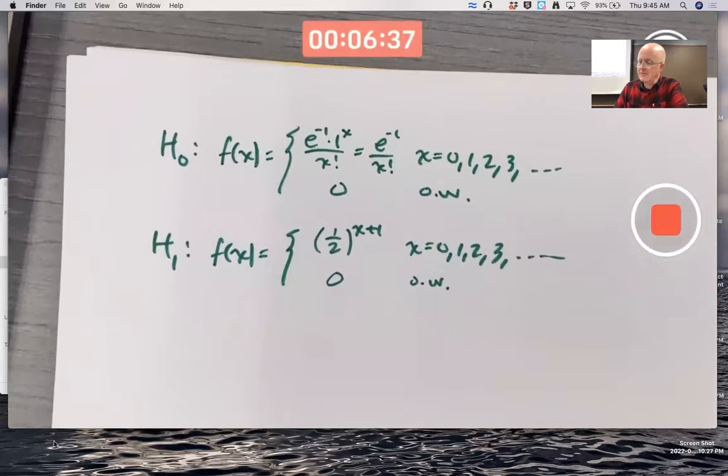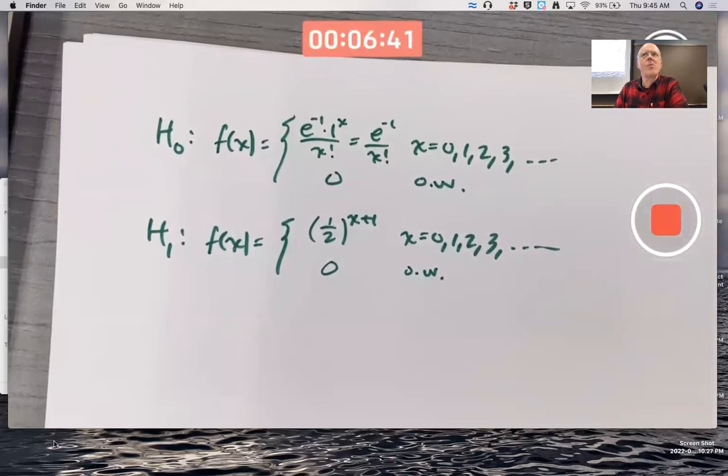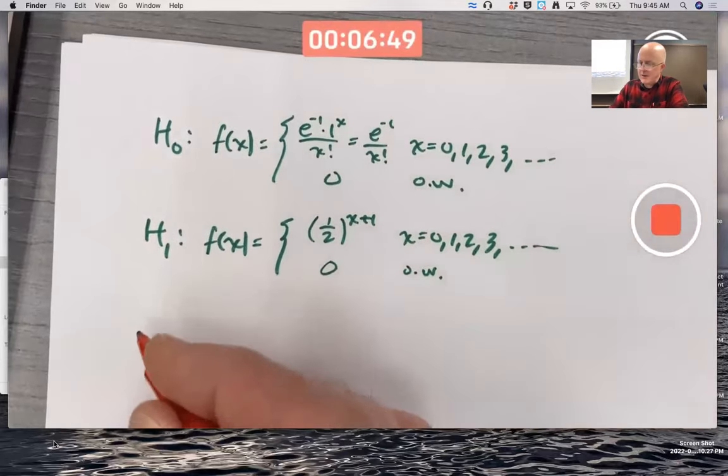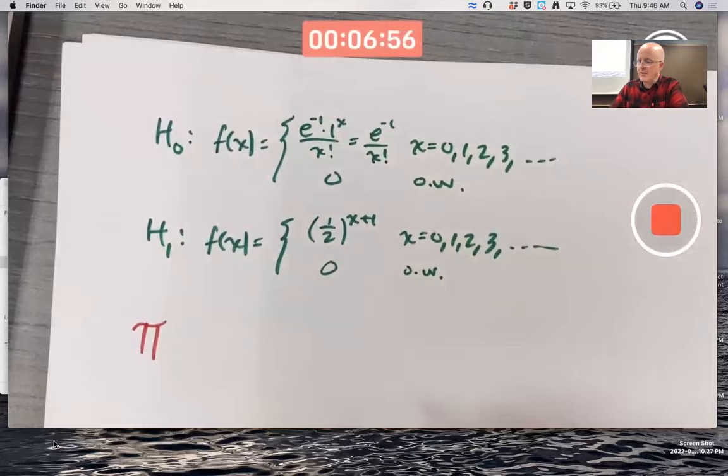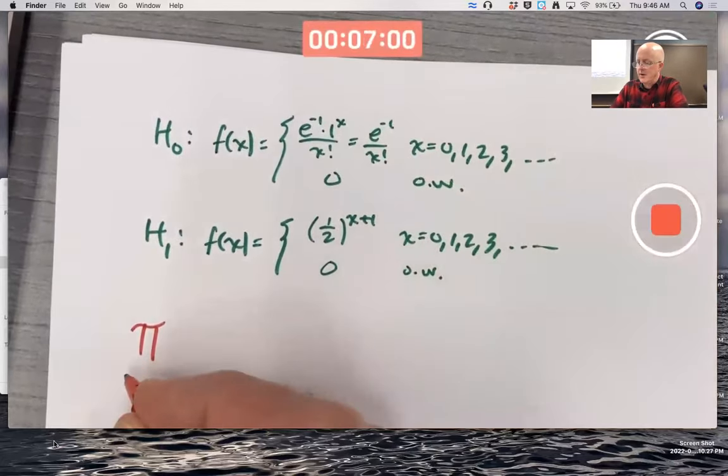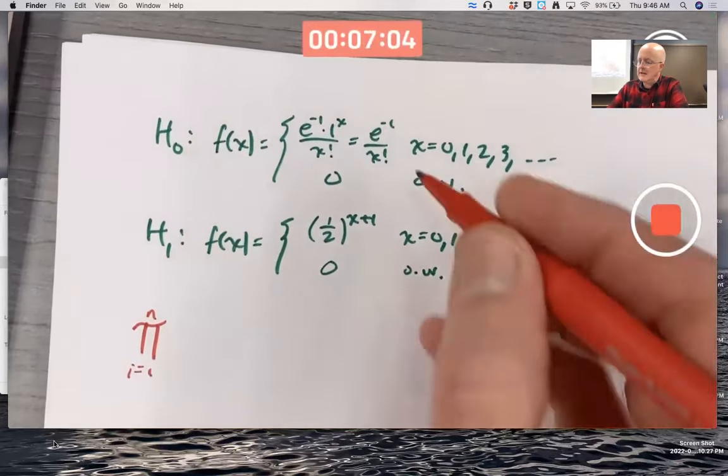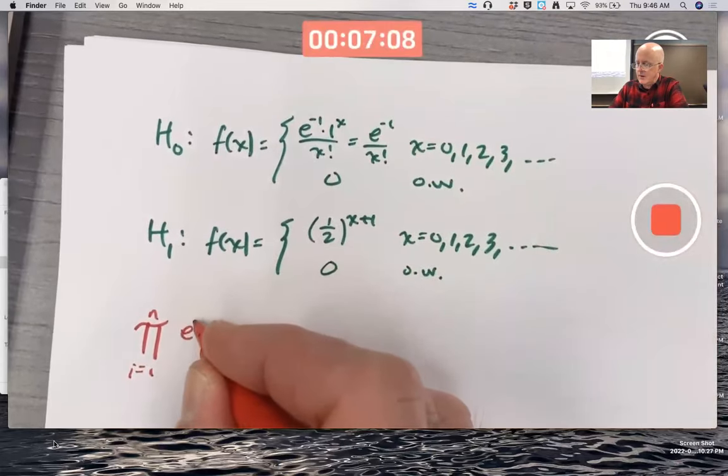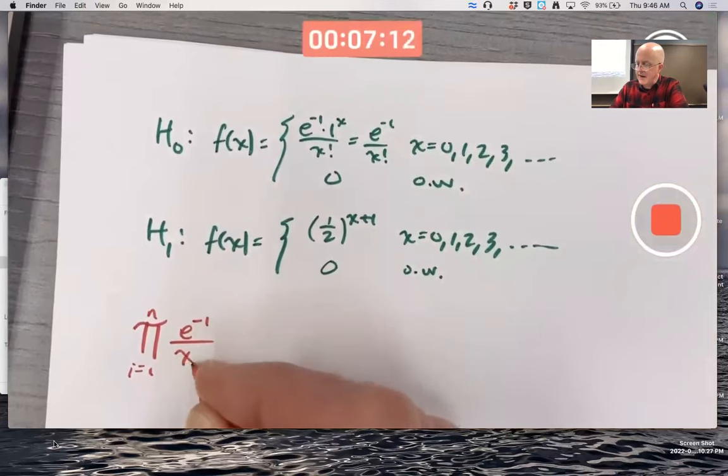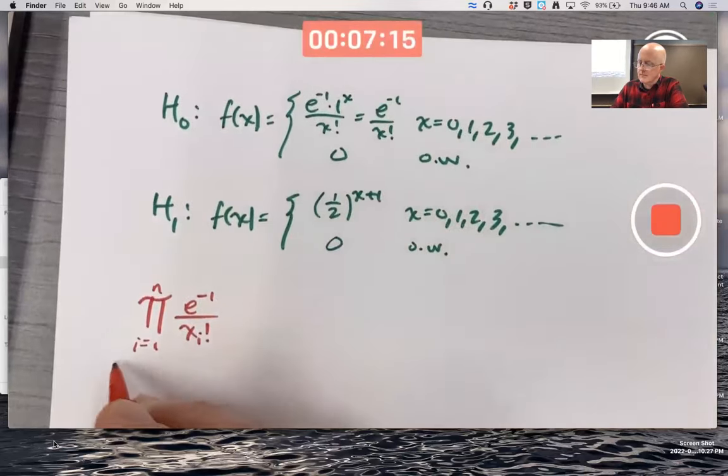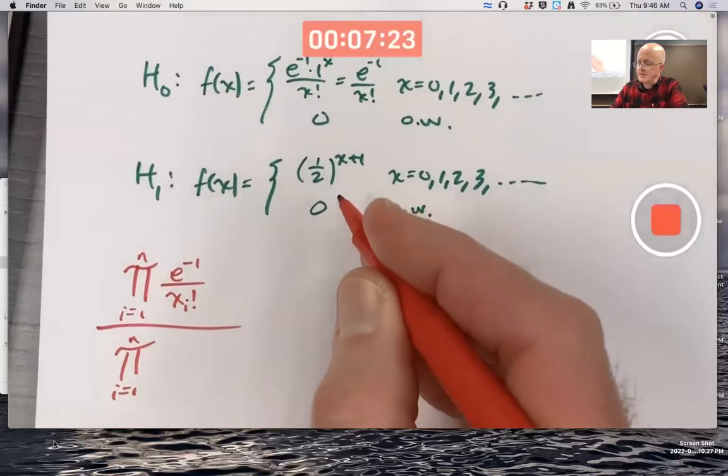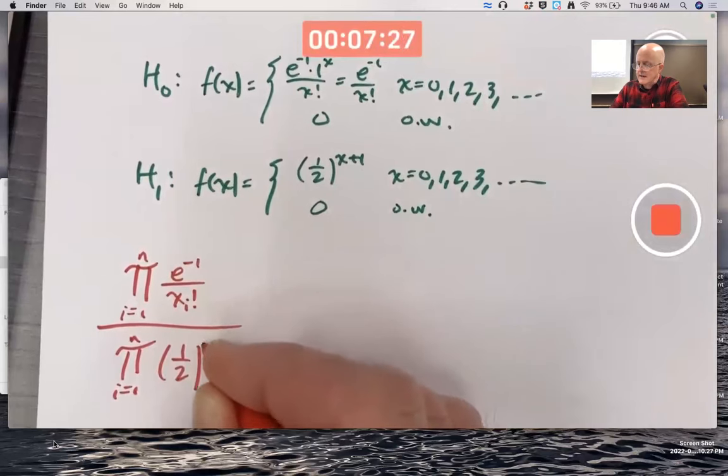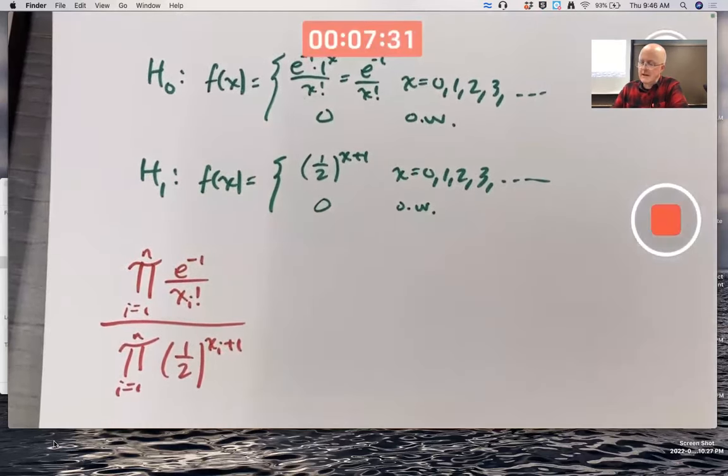All right. So let's go ahead and look at the likelihood ratio. I think I will not use the L notation because there's really not, in a sense, one likelihood function because there are two different PMFs. But I will write the ratio. That's the product of the likelihood functions for each of these things individually. The numerator for the null hypothesis, the denominator for the alternative hypothesis. So in the numerator, we do have the product of these kinds of expressions, e to the negative 1 over x sub i factorial. And in the denominator, we have the product of these kinds of expressions 1 half to the x sub i plus 1.